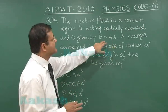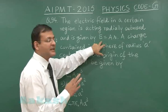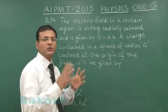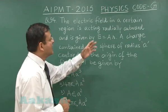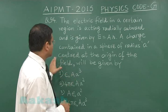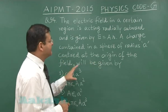You should understand here that this E is variable electric field. A is a constant and R is a variable. It is radially outward moving electric field. A charge contained in a sphere of radius A centered at the origin of the field will be given by...